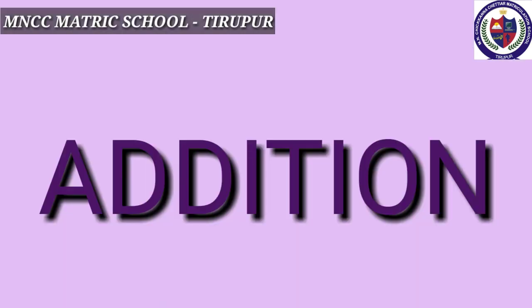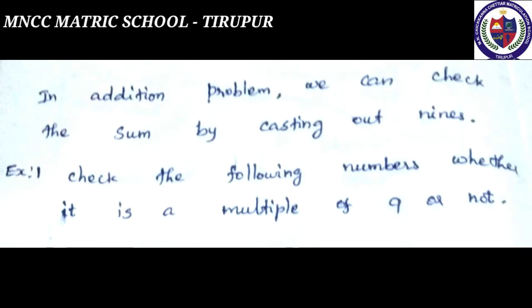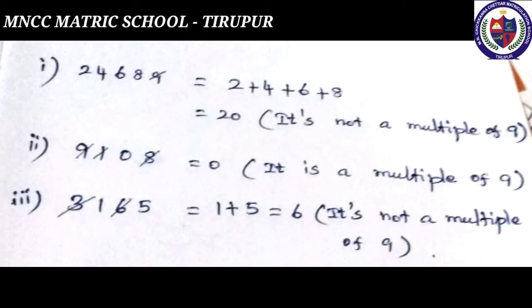In an addition problem, we can check the sum by casting out 9s. Example 1: check whether the following numbers are multiples of 9 or not. First: 24,689 — strike out 9, leaving 2, 4, 6, 8. Add them: 2 + 4 + 6 + 8 = 20. It is not a multiple of 9.